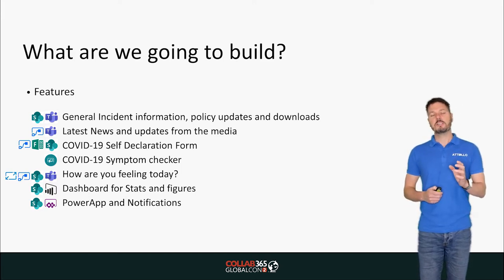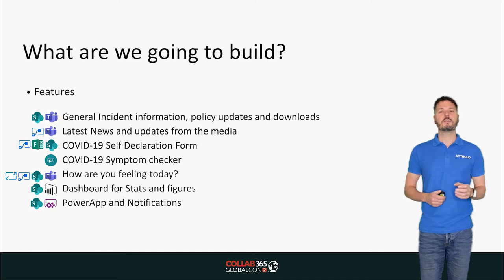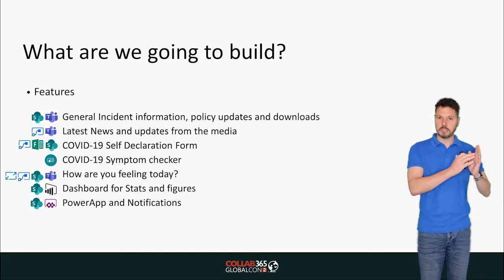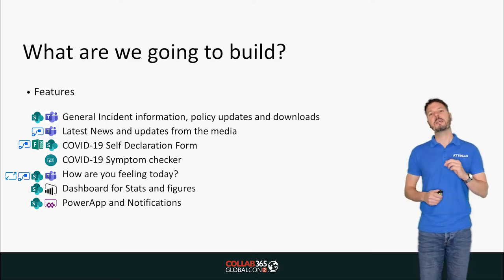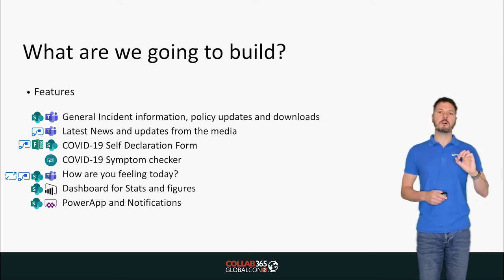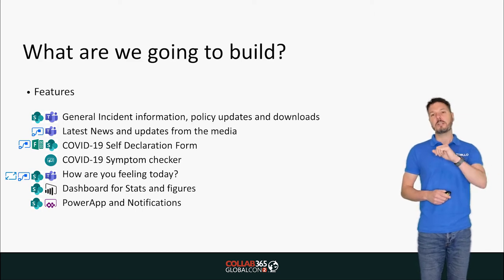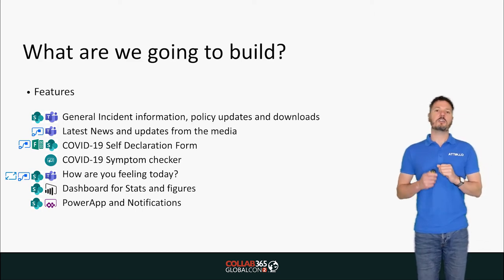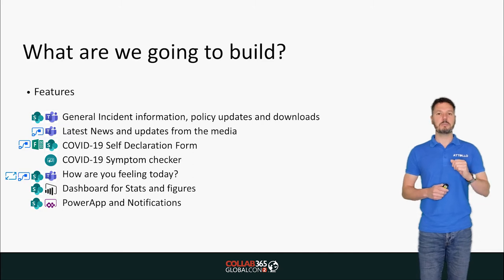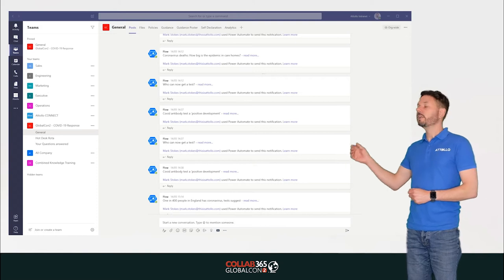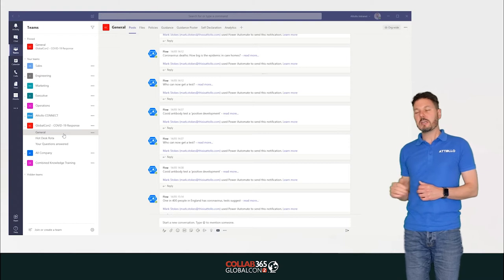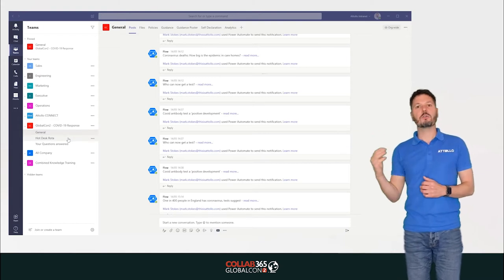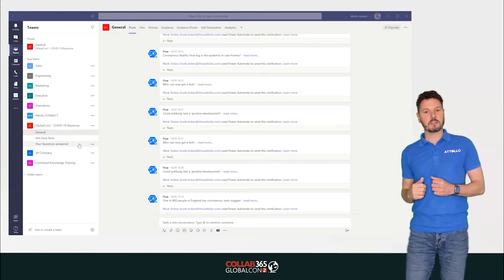In our demo we have our Microsoft Team with three channels: a general channel where most content goes, a hot desk router channel, and a 'Your Questions Answered' channel to separate conversations. In the general channel we can see a whole set of news coming from an external source — BBC News. We also get a notification coming through from our Power App.